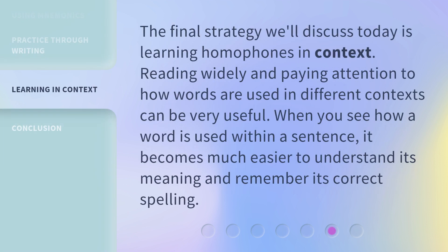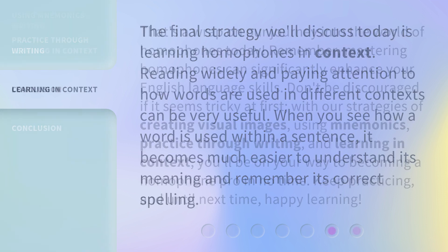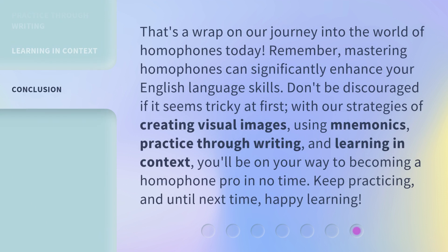The final strategy we'll discuss today is learning homophones in context. Reading widely and paying attention to how words are used in different contexts can be very useful. When you see how a word is used within a sentence, it becomes much easier to understand its meaning and remember its correct spelling.